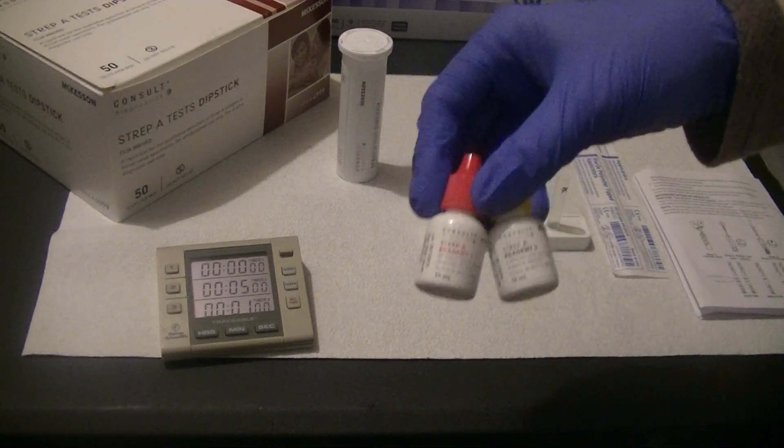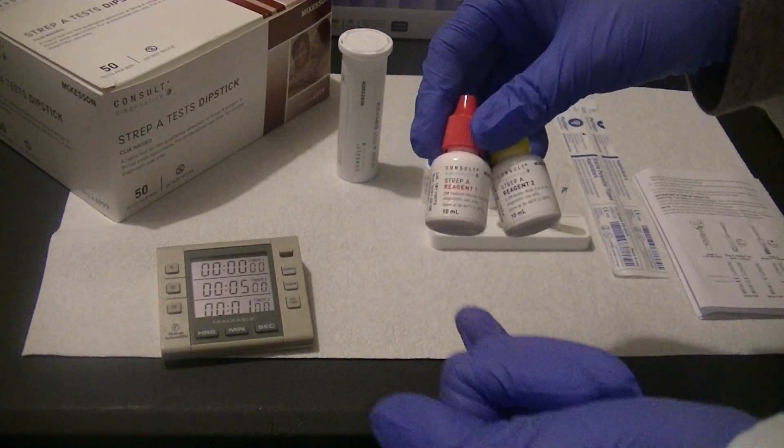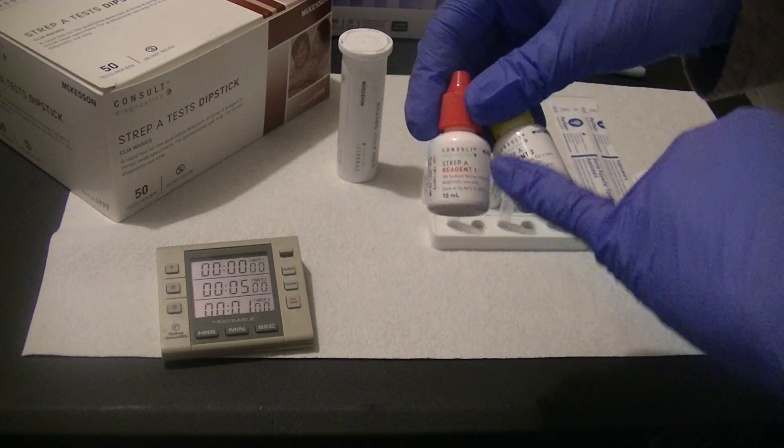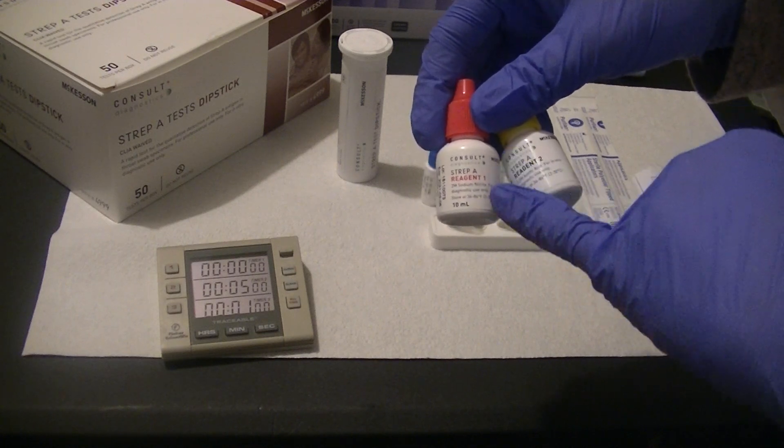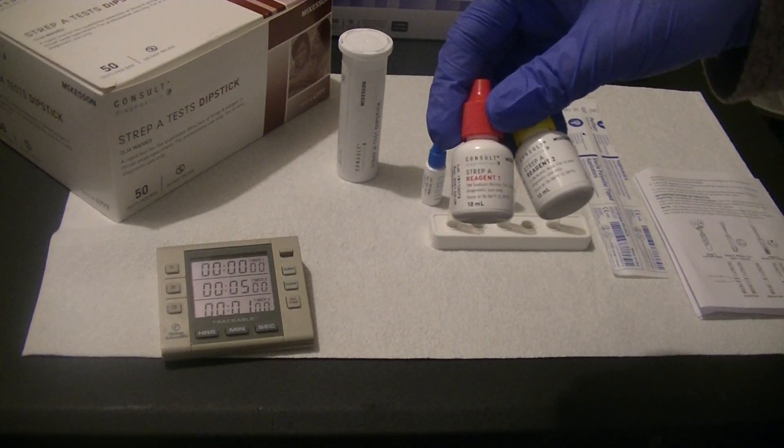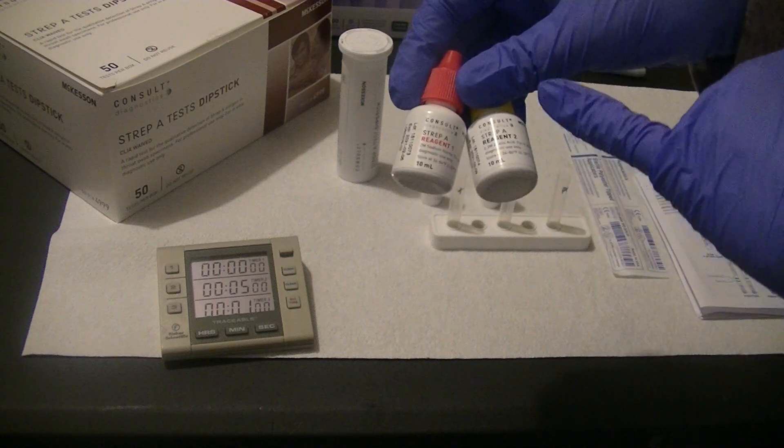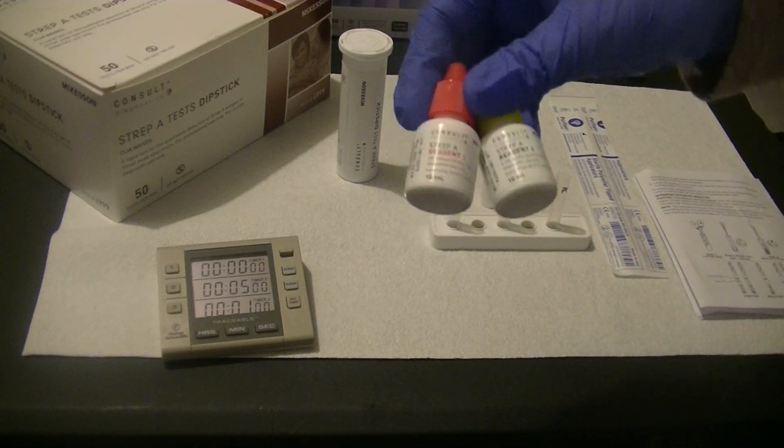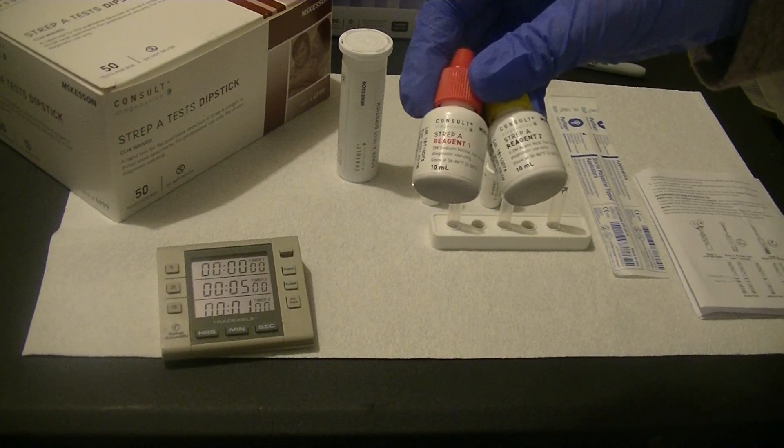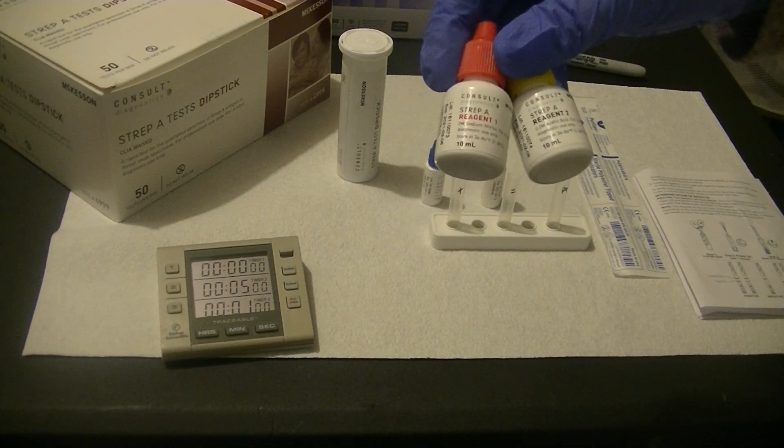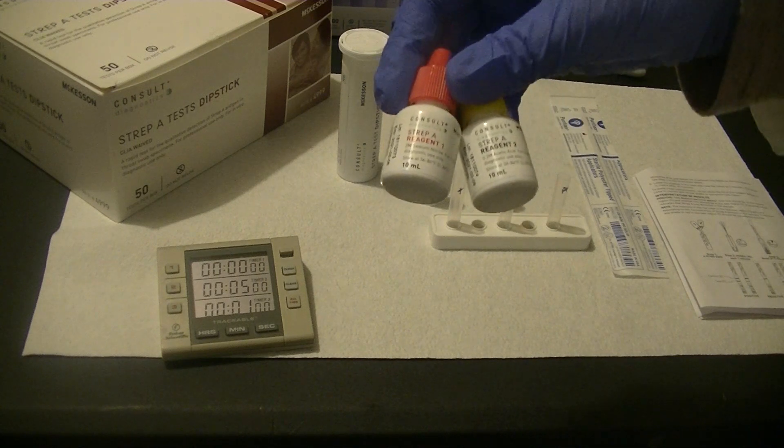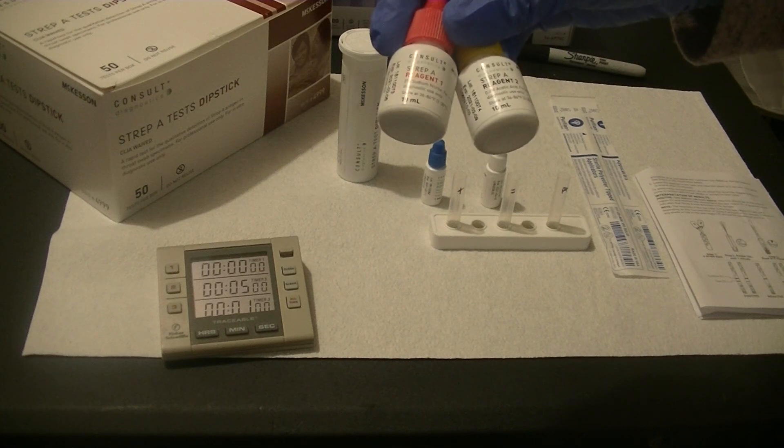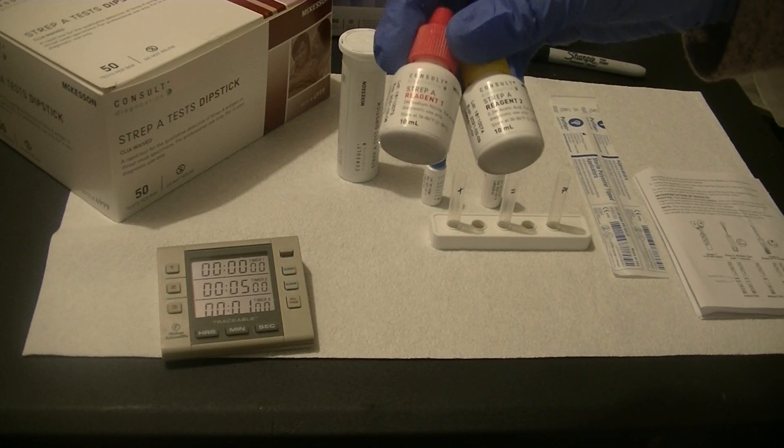We add four drops of each reagent because the first reagent is going to extract or remove antigens from strep bacteria from the surface of the bacteria if they are present in a patient sample. Reagent 2 contains antibodies against strep antigens that are on the surface of the bacteria. Those antibodies are going to be how we detect whether or not the person has strep organism in their throat.